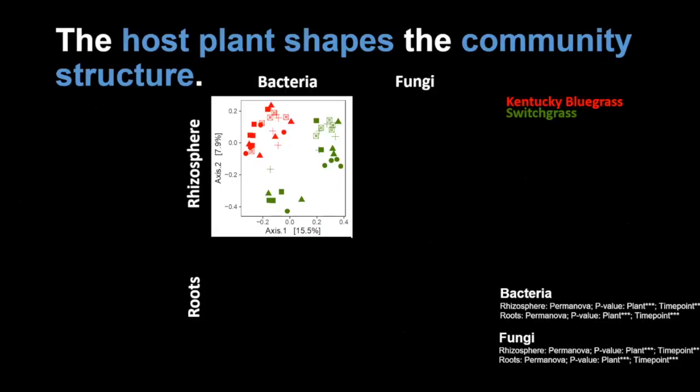We also wanted to see how the community structures of these plants compared — not just the differences in richness, but how that would relate to the community structure. Do they have a similar community structure? And so far it turns out that they don't.